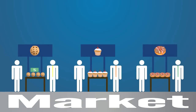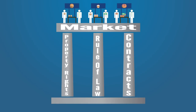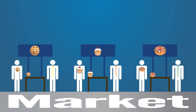Consider markets, for example. Markets are nothing more than a set of institutions that allows for voluntary exchange. Markets require the protection of private property, the rule of law, and the enforcement of contracts. All of those are part of our Constitution, which by protecting those institutions creates a society in which wealth is created through market exchange.